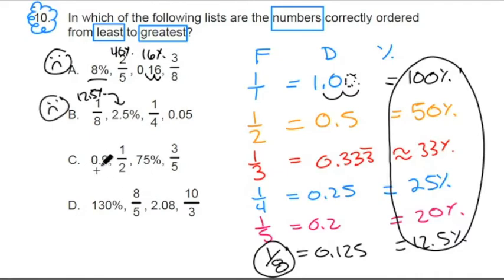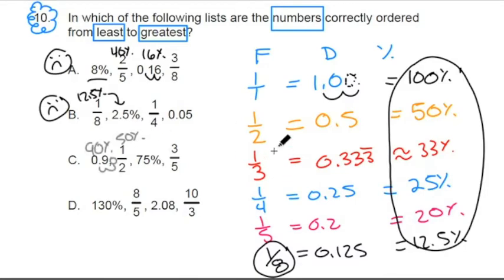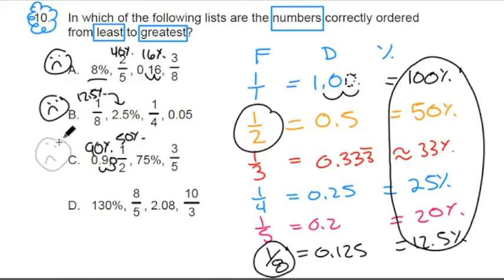Option C: 9/10 — moving the decimal two spaces — becomes 90%. One half is 50%, one of our core fractions. So the sequence goes up then down. That's our third frowny face in a row.